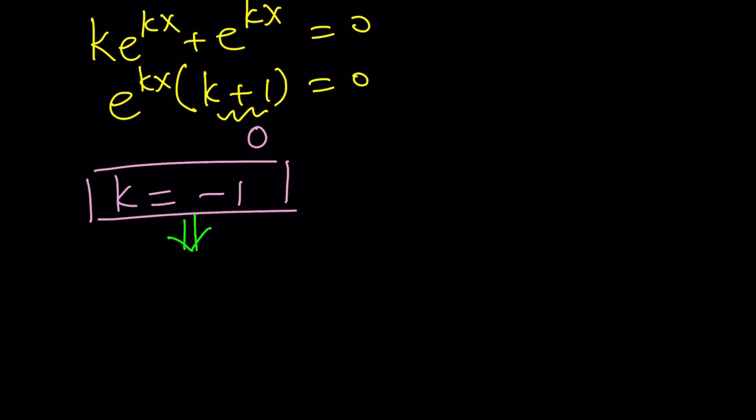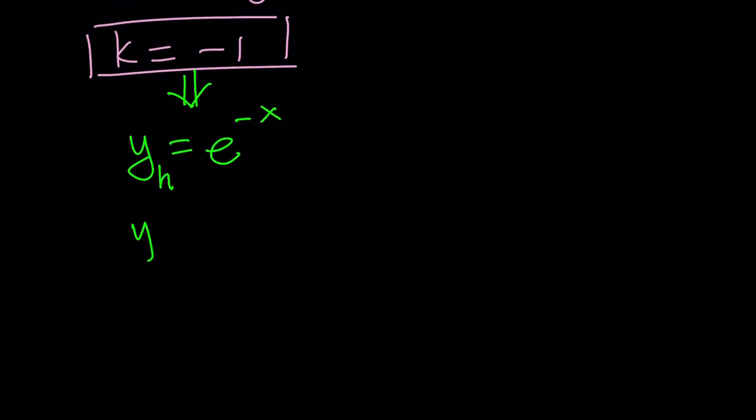Since k is negative one, then our y is going to be e to the power kx, which is negative x. Awesome. But it's only part of the solution. What do I mean by that? This is the homogeneous solution, so I'm going to call that y sub h. Make sense? And what are we looking for? We're looking for the general solution, y sub g. The general solution should be something like the y homogeneous plus the y particular.